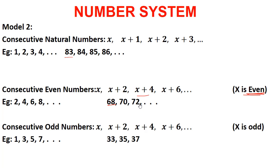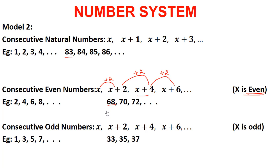The key point to observe is that between two consecutive even numbers, the difference is always 2. So adding 2 each time gives the next consecutive even number. Therefore, x, x+2, x+4, x+6 forms consecutive even numbers, provided that x is even. For example, 2, 4, 6, 8 are also consecutive even numbers.